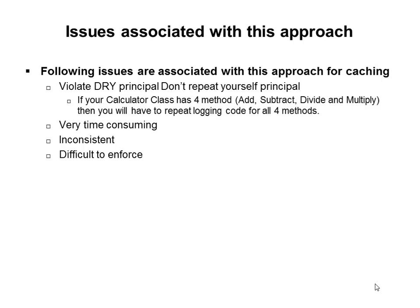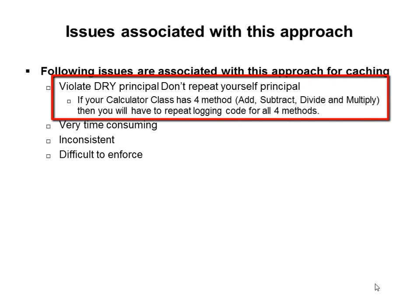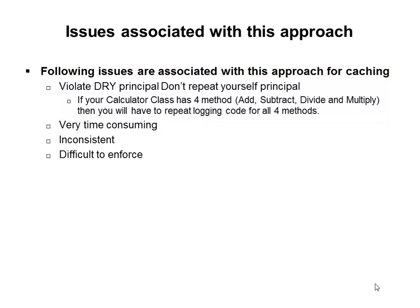Following are the issues associated with this approach. It violates the DRY principle, that is don't repeat yourself. If suppose you have four methods — add, subtract, divide, and multiply — you will have to implement caching in all four methods. It's very time-consuming, it's inconsistent, and it's very difficult to enforce.